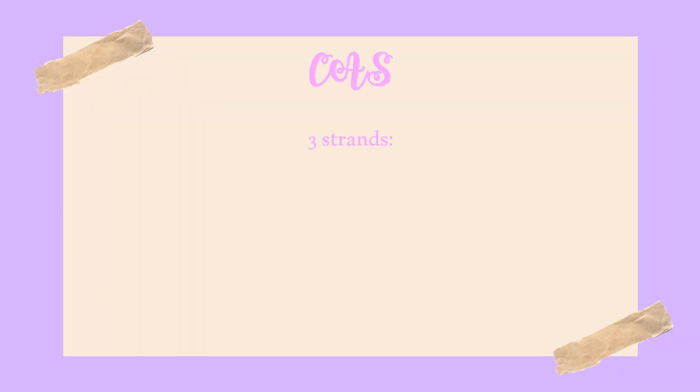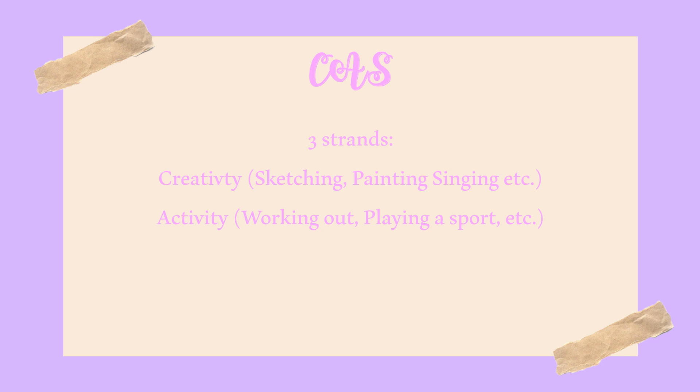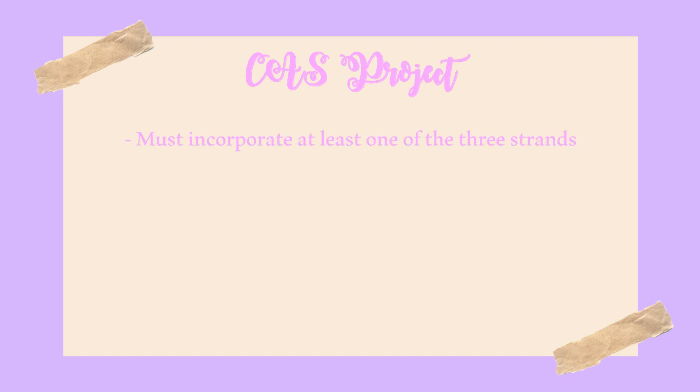The last component linked to whether a student gains their diploma is CAS, which stands for creativity, activity, and service. Creativity can include sketching, painting, or singing. Activity can include any physical activity like walking, working out, or playing a sport. Service consists of anything that benefits your community, like tutoring kids from your neighborhood or doing an internship. Students must perform CAS continuously throughout the two years of their program, with at least one activity, creativity, or service act per week. Students also have to complete a CAS project by the end of the two years incorporating at least one of those categories.